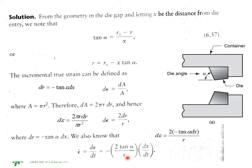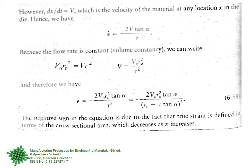For dε/dt, for dε you have the equation 2·(-tan(α)·dX) / r, so it becomes -2·tan(α)/r · dX/dt. Now dX/dt is the velocity — X is the travel distance of the RAM, so dX/dt is the RAM velocity. Therefore, instead of dX/dt you write V, and the equation becomes ε̇ = 2V·tan(α) / R. This is a brilliant equation.